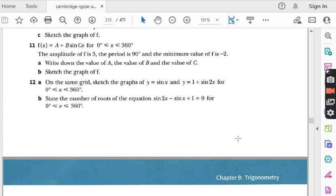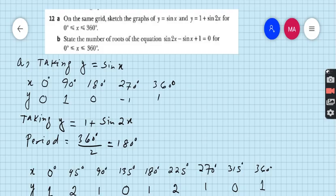Let's start question number 12. Part a: on the same grid sketch the graphs of y equals sin x and y equals 1 plus sin 2x for 0 to 360 degrees. This is the domain so we cannot go beyond 360 degrees.